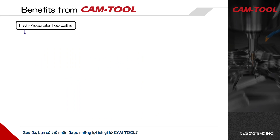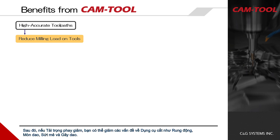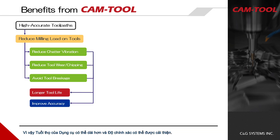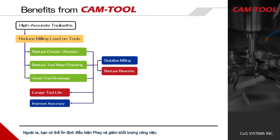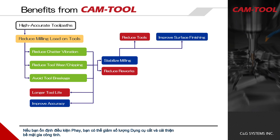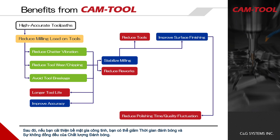What benefits can you get from CamTool? Firstly, you can reduce the milling load on cutting tools with CamTool's accurate toolpaths. If the milling load is reduced, you can reduce cutting tool problems such as chatter vibration, tool wear, chipping, and tool breakage, so tool life can be longer and accuracy can be improved. You can also stabilize the milling condition and reduce reworks.